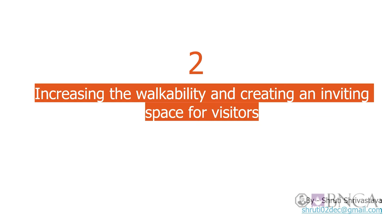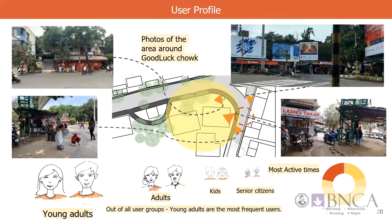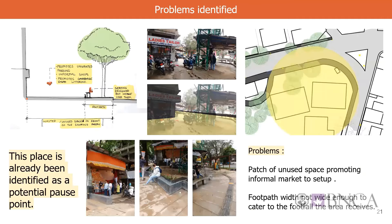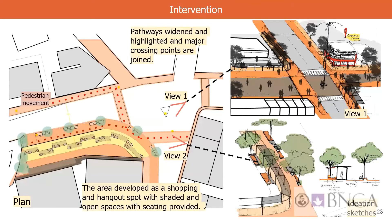The second intervention is increasing the walkability and creating an inviting space for visitors. The location is in front of Good Luck Cafe, which is one of the most popular Iranian cafes in Pune. Youngsters are the most frequent visitors in this area. Even though this place is highly identified as a potential pause point, there are patches of unused space promoting informal markets to set up, and the footpath is not wide enough to cater to the footfall the area receives. Thus, the intervention is developing public space in front of Good Luck Cafe by widening the path and developing a shopping center and hangout spot with shaded and open spaces with seating provided.